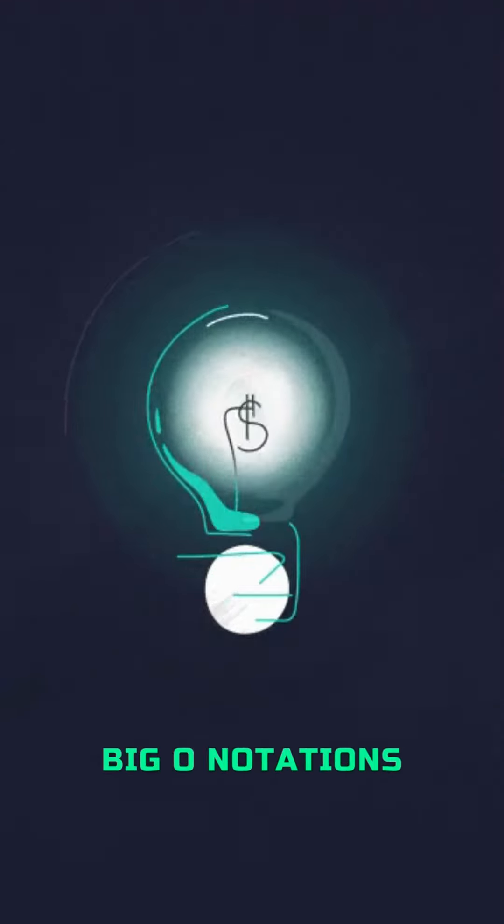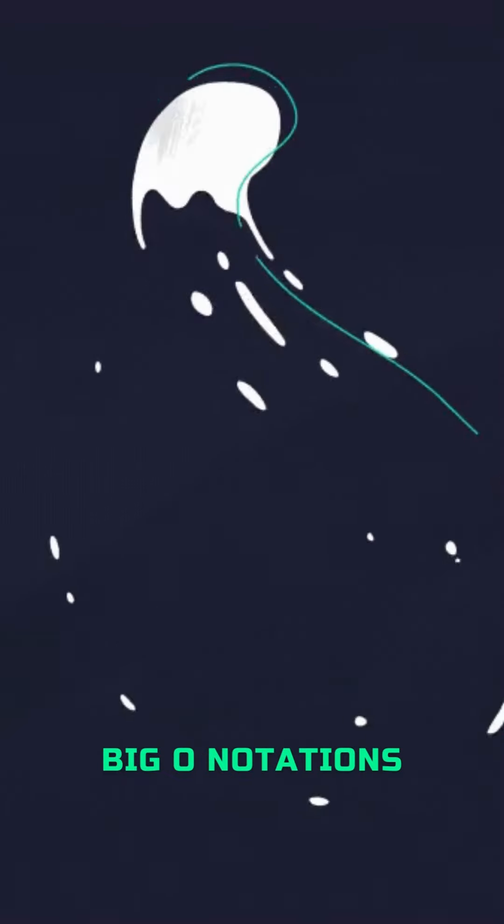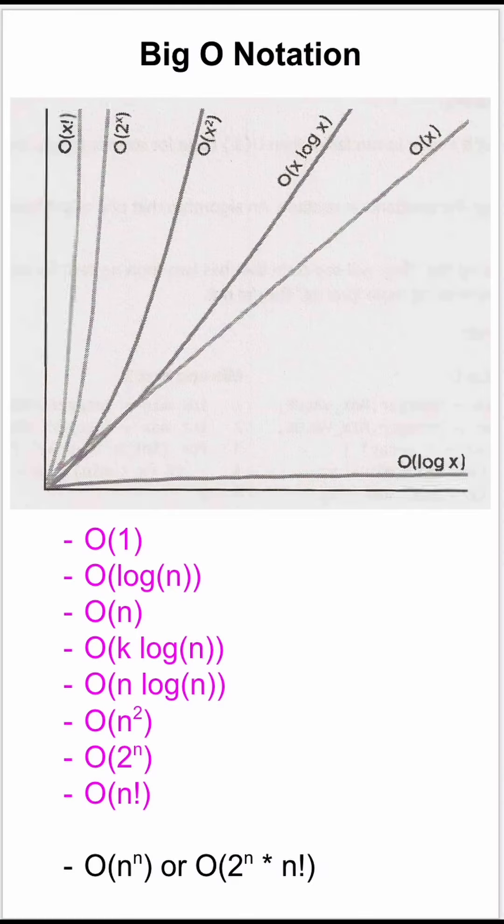In this video, we will learn about Big O notations that come in handy when calculating code runtime and space complexity. There are different types, but these are most common: O(1), O(log n), O(n), O(k log n),